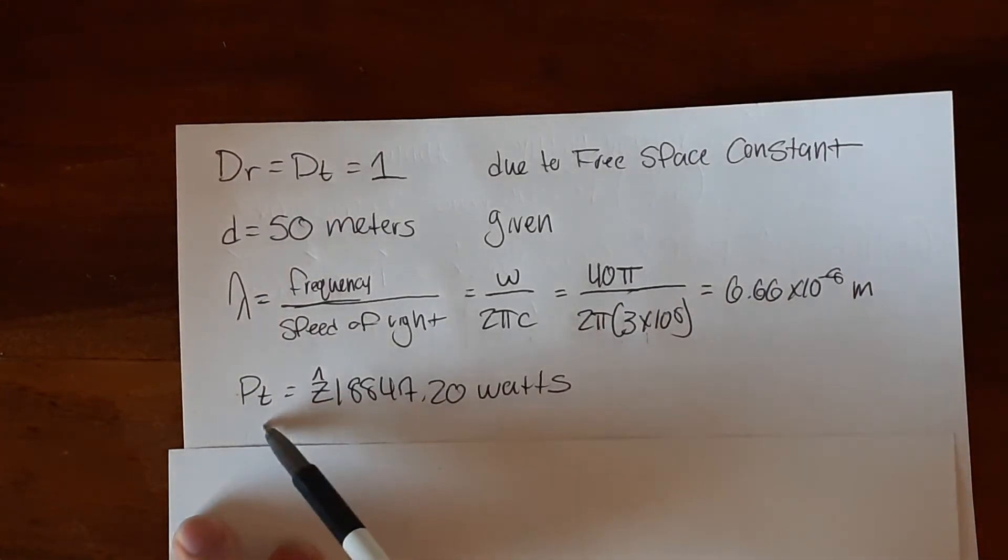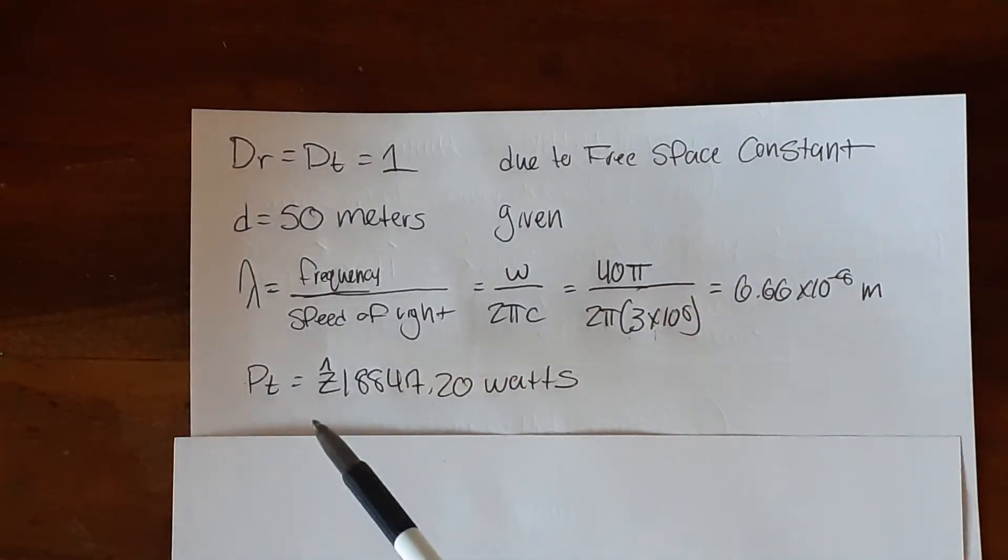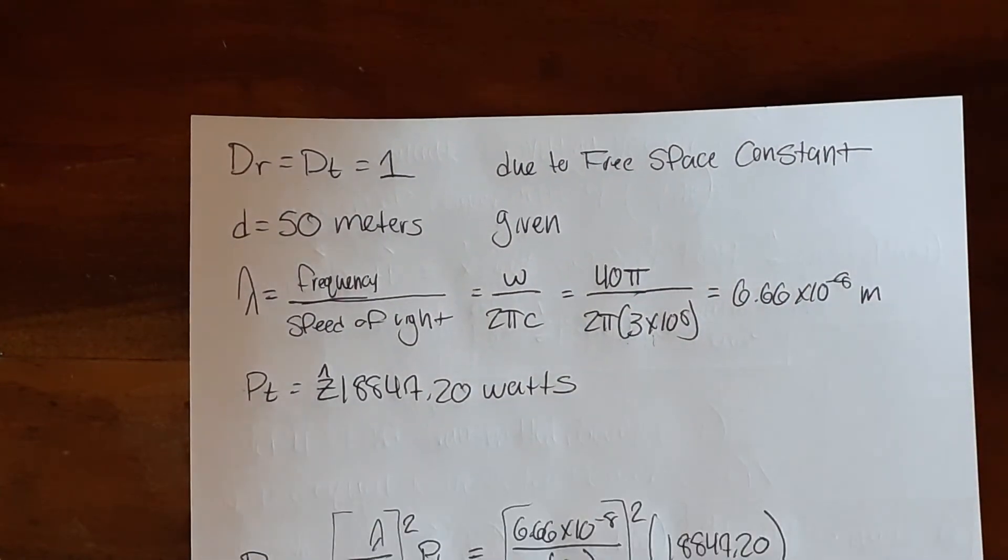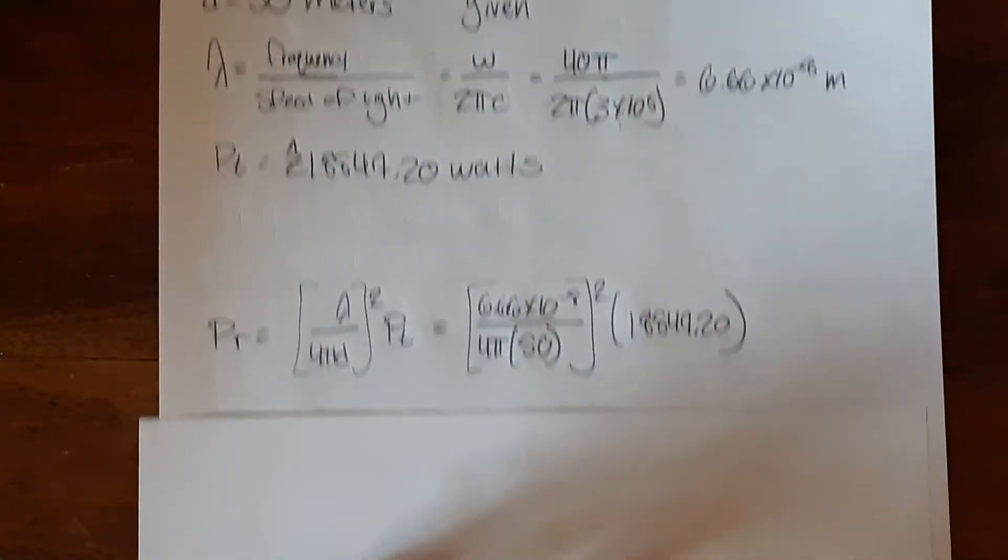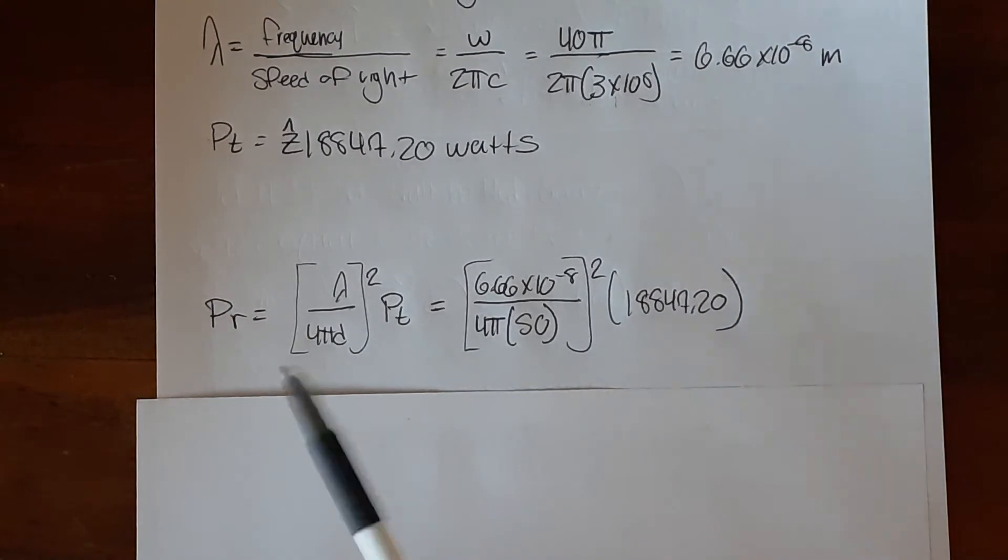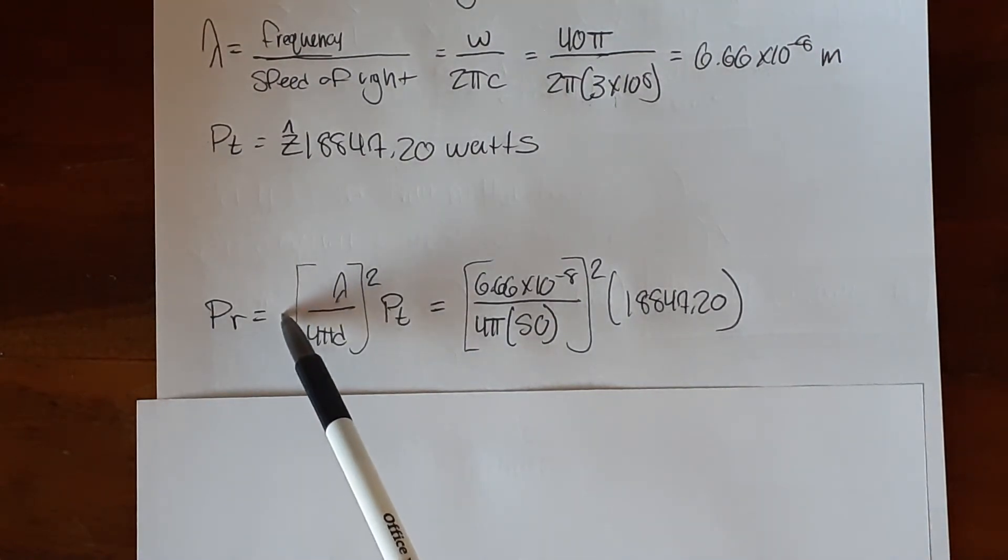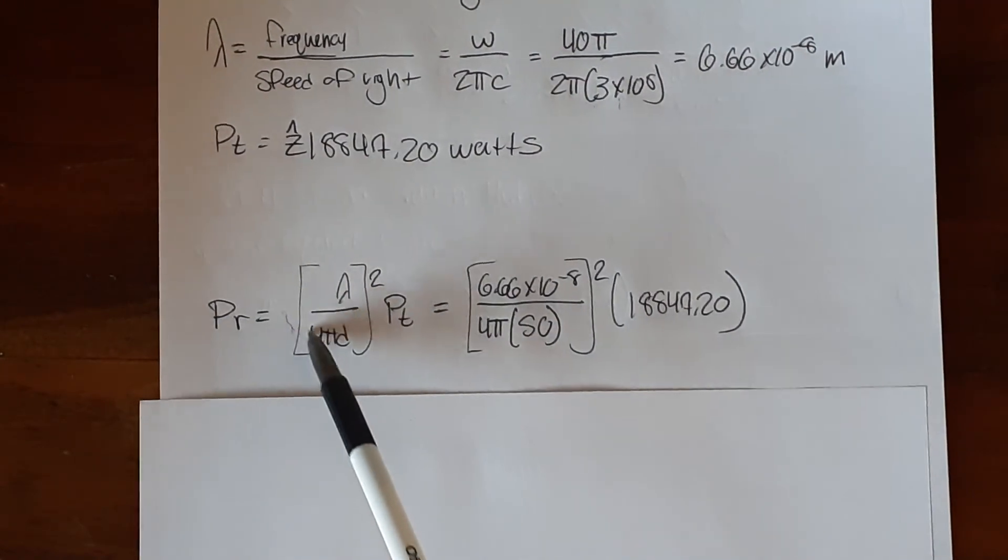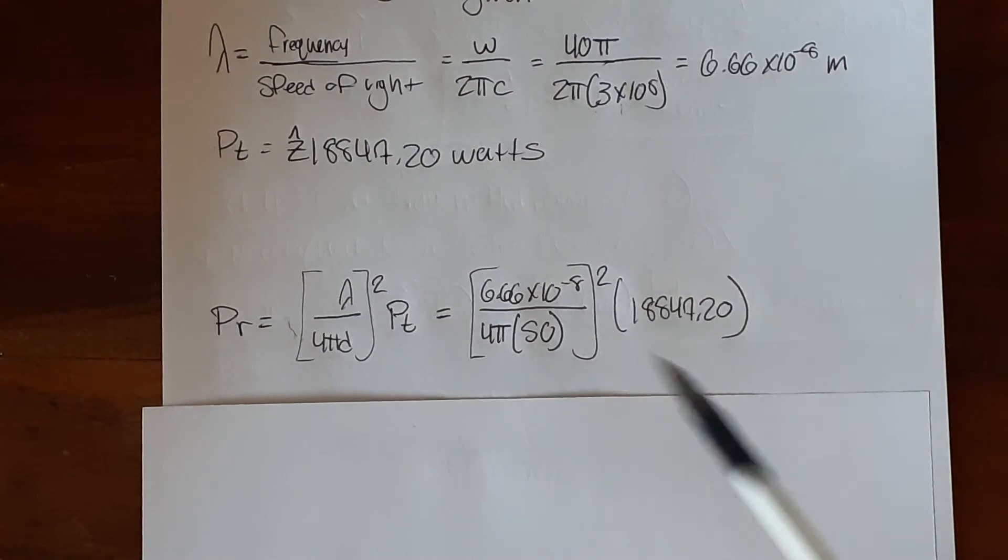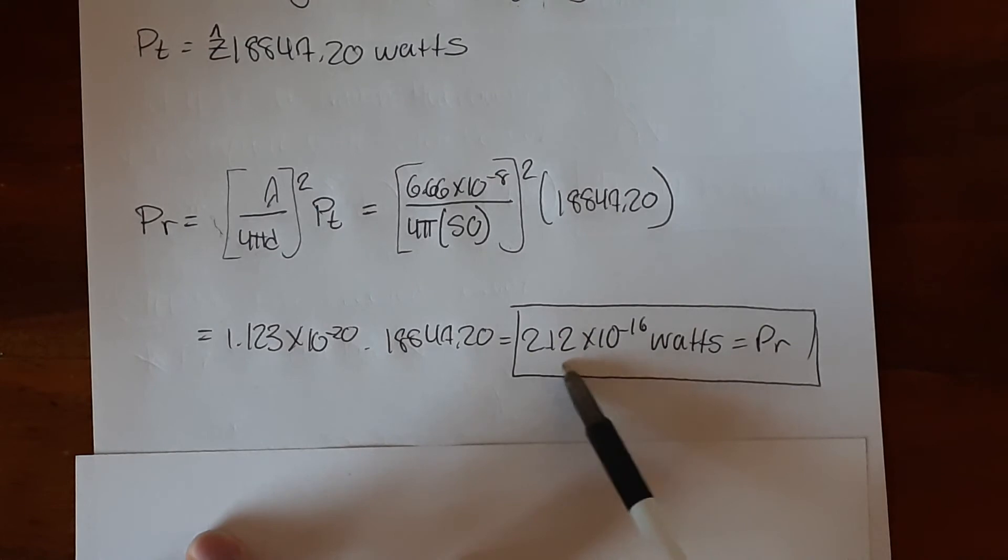So the transmitted power that we got in the last step, which is the same, that watts. So we rearrange the equation a little, and we get our received power is equal to the wavelength over 4 pi times the distance squared multiplied by the transmitted power. I took out the directivity constants because they're both 1, so they don't matter. So you do that, and you get a received power of a very very very small amount of power. That's times 10 to the negative 16.